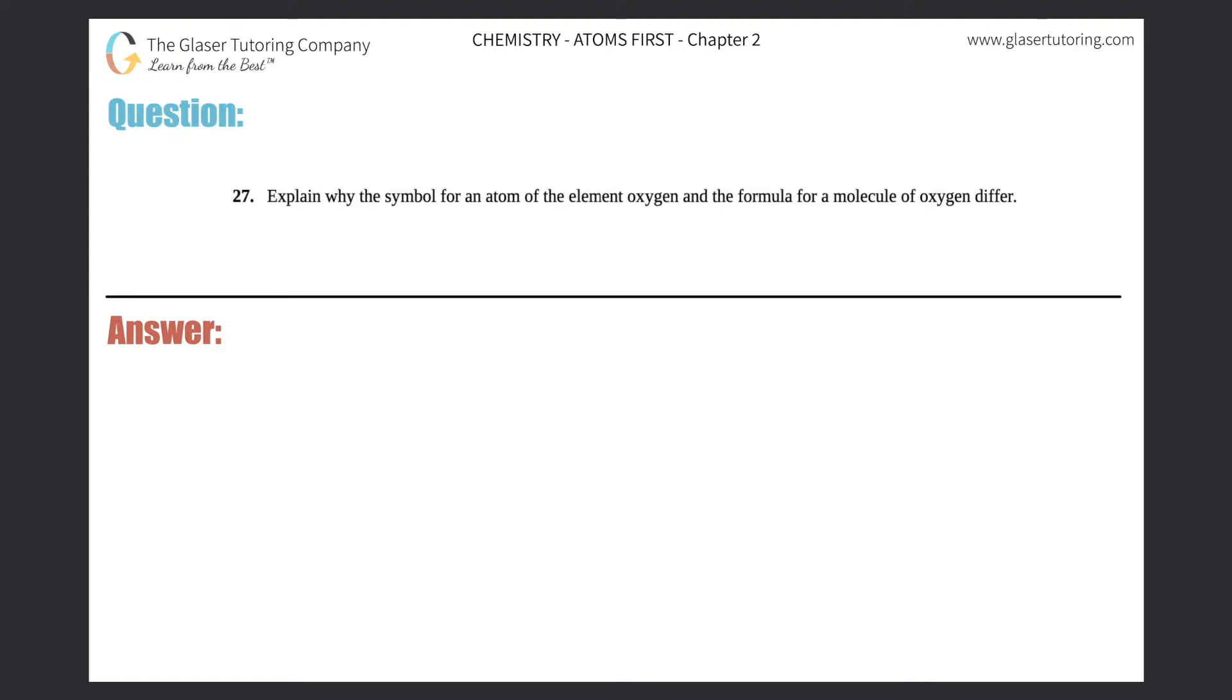Number 27: Explain why the symbol for an atom of the element oxygen and the formula for a molecule of oxygen differ. Alright, so this one's pretty simple. We just have to know the difference between an atom and a molecule.